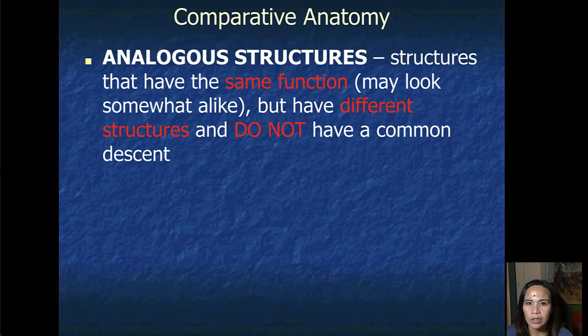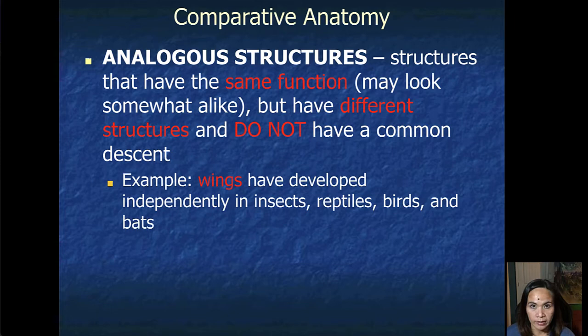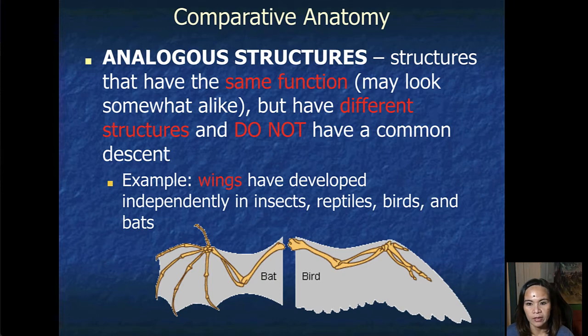What about analogous structures? These are structures that have the same function. They may look somewhat alike, but have different structure and do not have a common descent. An example would be the wings that have developed independently in insects, reptiles, birds, and bats. As you can see here in this example, the bats' wings and the birds' wings are totally two different structures, but their function is the same, which is for flying.